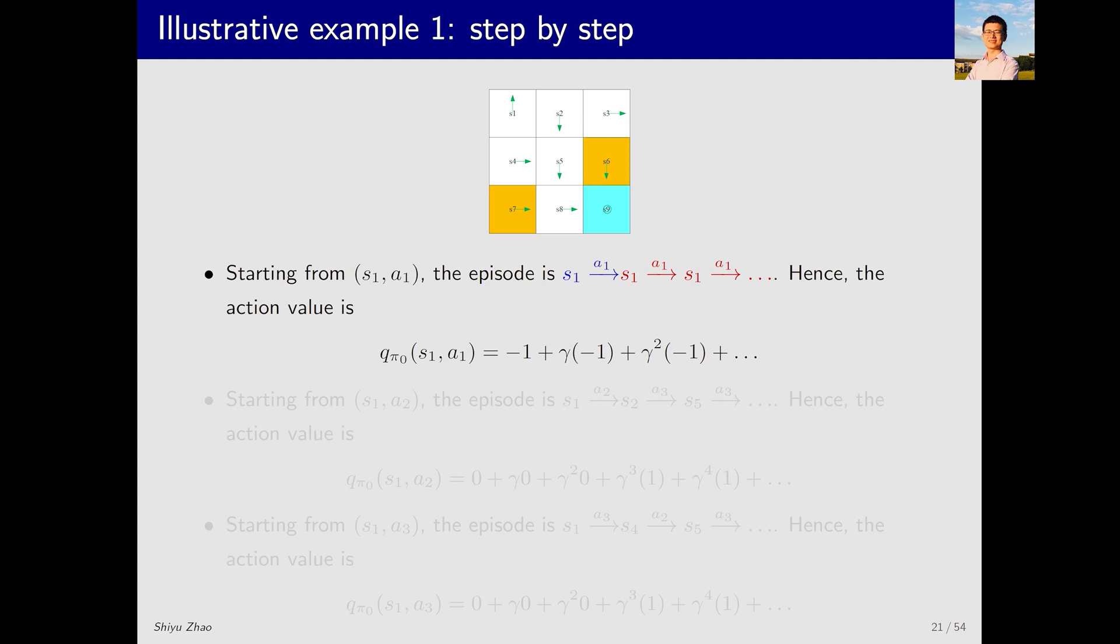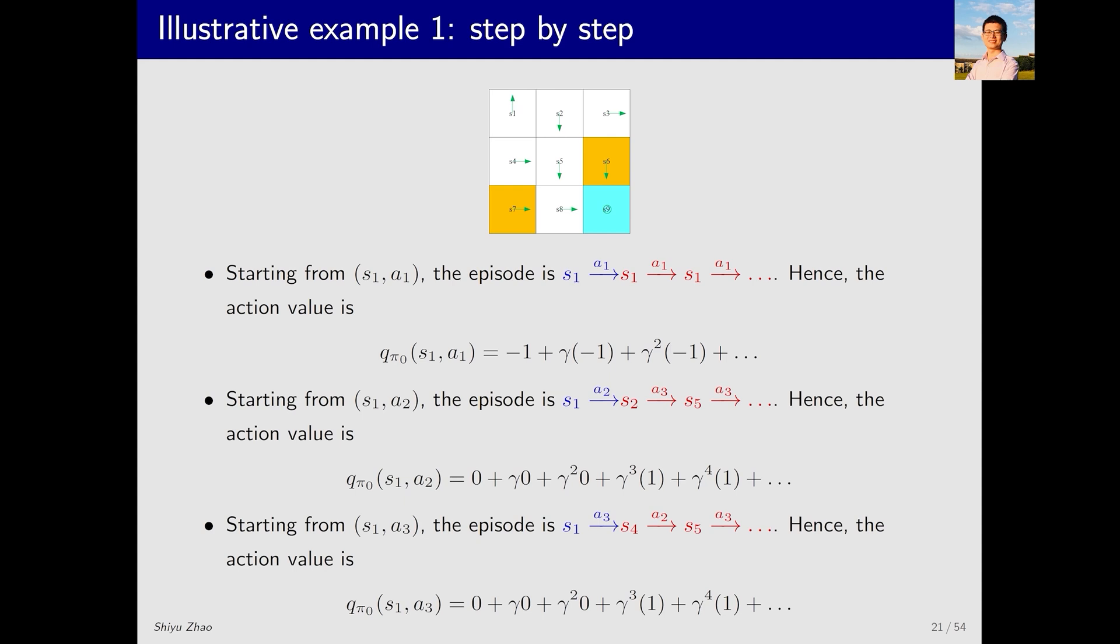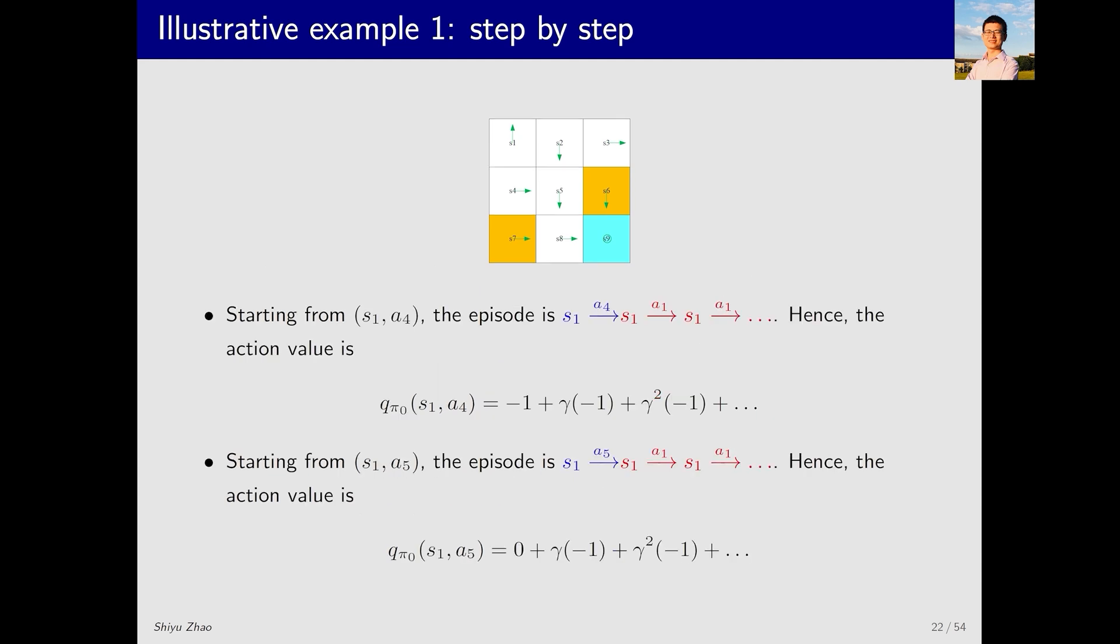Now, let's examine the trajectory starting from state S1 and action A1. The trajectory would be going up from S1, then it comes back, goes up again, and comes back once more. This trajectory is S1A1S1A1. We can then compute the return corresponding to this trajectory, which is Qπ0(S1,A1). Apart from S1A1, we also need to compute this for S1A2, S1A3, S1A4, and S1A5. The method for each of these is similar, and I won't go into further detail here.